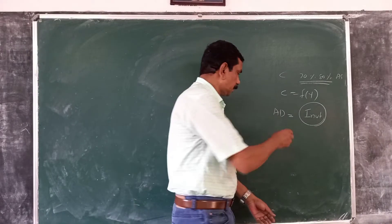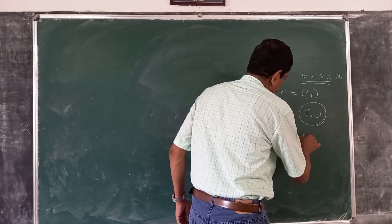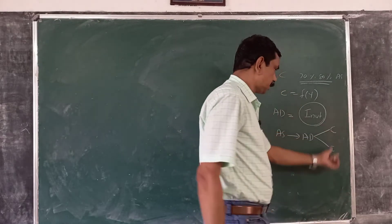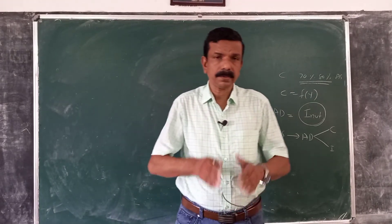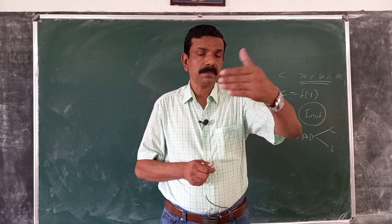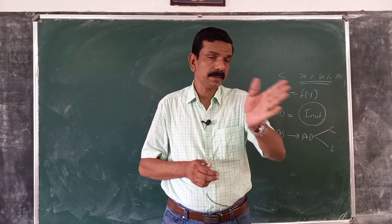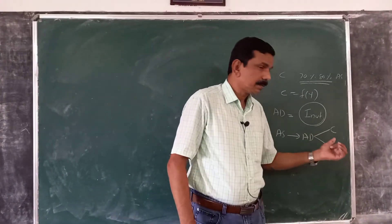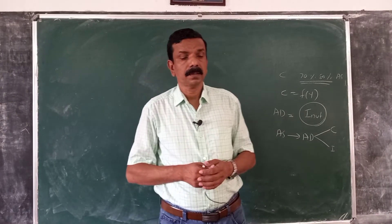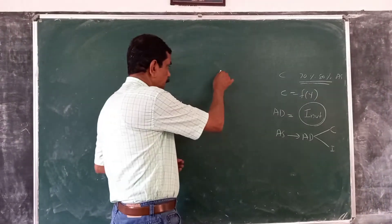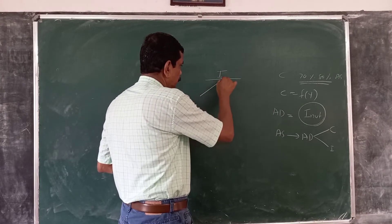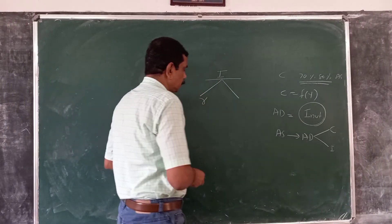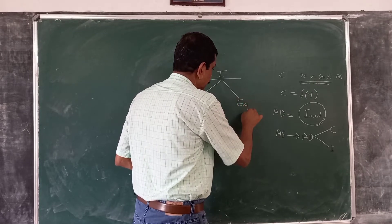Remember this: in the Keynesian model, aggregate supply depends on aggregate demand. Aggregate demand depends on consumption and investment. Consumption is a stable component — as long as income is constant, consumption will also remain constant, and consumption will change if and only if income changes. So, what causes change in income is change in investment. This desired investment expenditure is determined by two factors: one is the interest rate, and the other is business expectations.